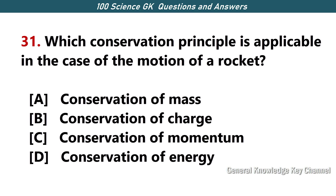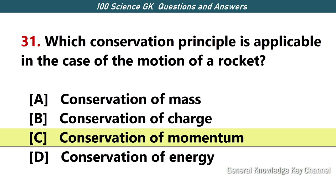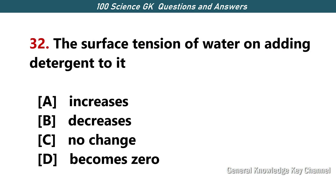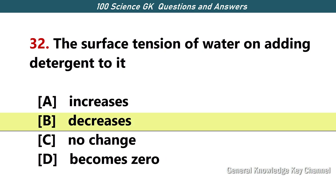Which conservation principle is applicable in the case of the motion of a rocket? Answer C — conservation of momentum. The surface tension of water on adding detergent to it — Answer B — decreases.